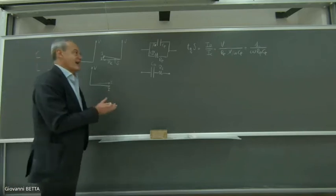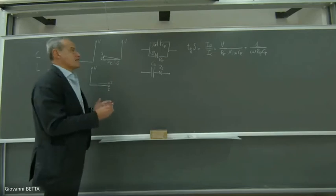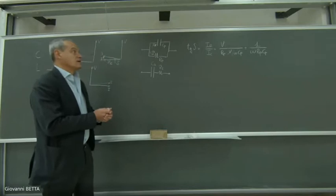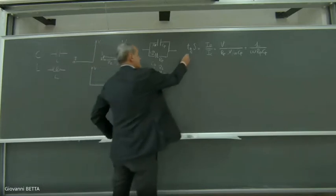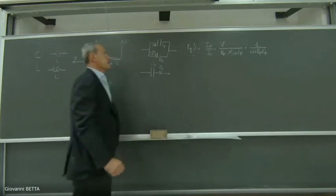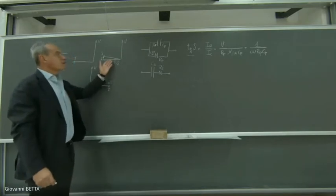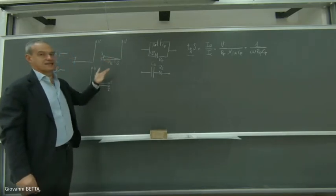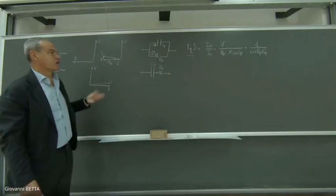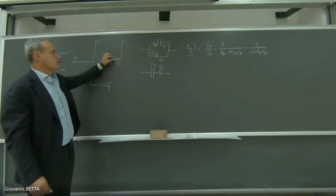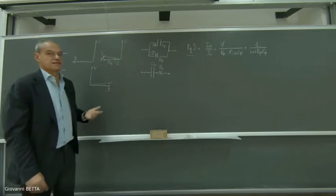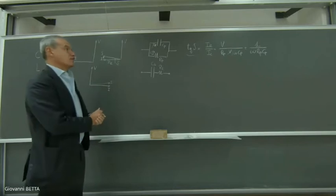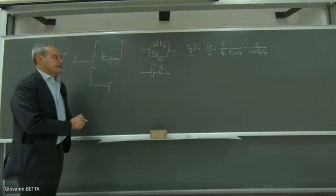Quando voi comprate un condensatore reale, vi viene fornito con il valore nominale della capacità e con il fattore di perdita. Tanto più è piccolo tan(δ), tanto più è buono il condensatore, cioè tanto più il condensatore reale si avvicina al comportamento del condensatore ideale.